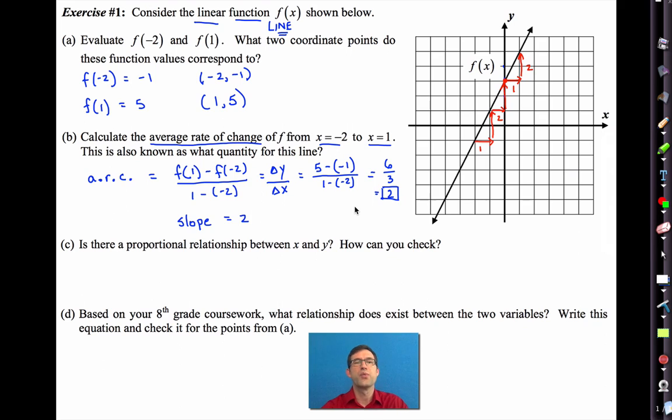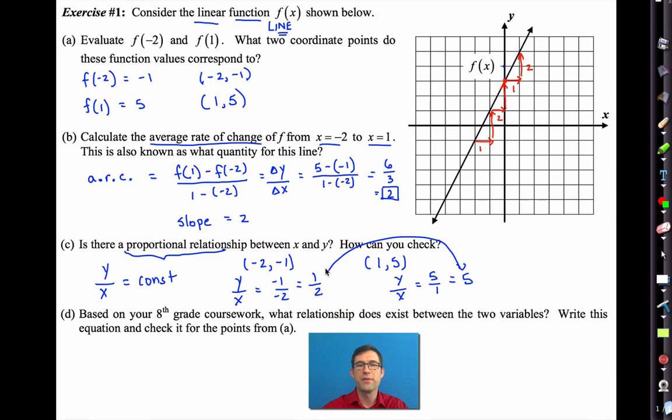Now, is there a proportional relationship between y and x? How can you check? Well, you probably already know that there's not a proportional relationship because it doesn't go through the origin. And on top of that, the actual title of the lesson is non-proportional relationships. But here's how you'd check. In a proportional relationship, y divided by x will be a constant. It won't change. But look what happens when we take the point negative two, negative one, and the point one comma five.